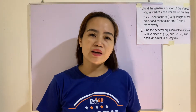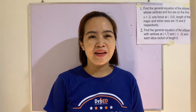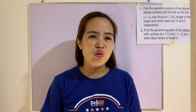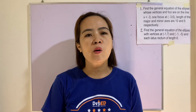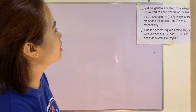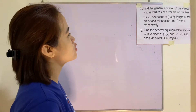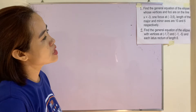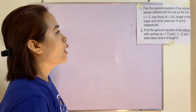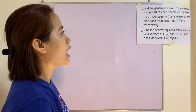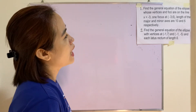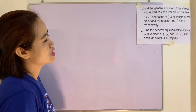Hello everyone, welcome back to my channel. Our most essential learning competency is solving situational problems involving ellipses. Example 1: Find the general equation of the ellipse whose vertices and foci are on the line x = -3, one focus at (-3, 6), and the length of the major and minor axes are 10 and 6 respectively.